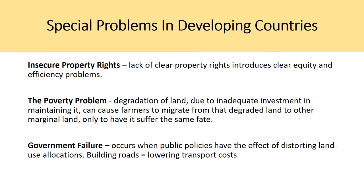What about other special problems in developing countries compared to developed markets? The first is insecure property rights — a lack of clear property rights introduces equity and efficiency problems. There's also the poverty problem, which is the degradation of land due to inadequate investment in maintaining it, causing farmers to migrate from degraded land to other marginal land. In developing markets, access to modern farming equipment is not accessible, so traditional techniques that may hurt the land are used. There's also government failure, which occurs when public policies distort land use allocations — for example, building roads lowers transportation costs, which flattens the bid-rent function and extends the efficient allocation further from the urban area.